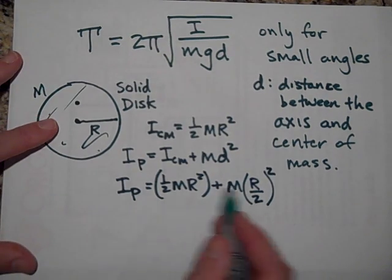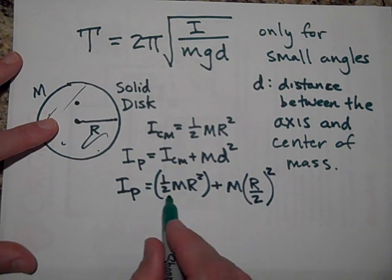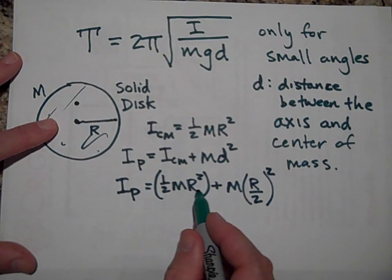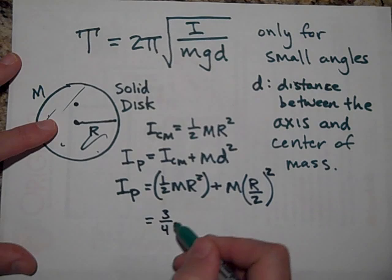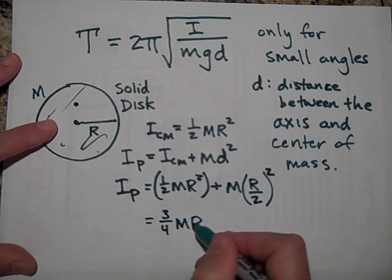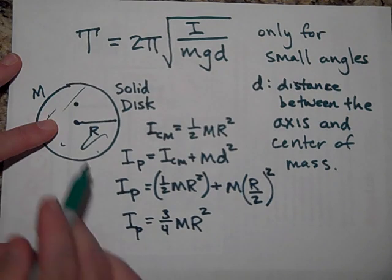Okay, let's just simplify this a little bit. This is going to be one fourth MR squared, and that's one half MR squared. So I'm thinking that's three quarters MR squared. That's what the I is about that axis.